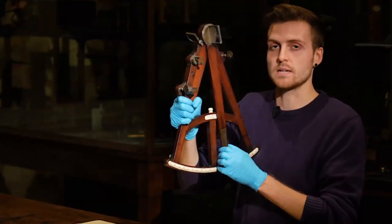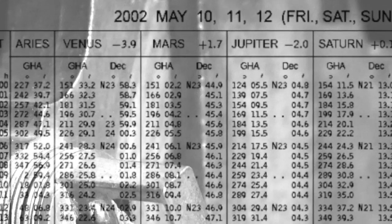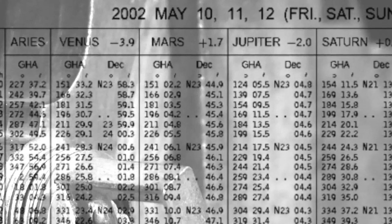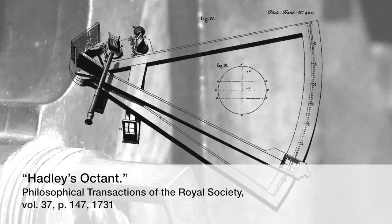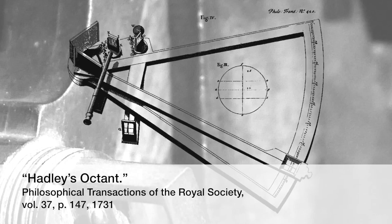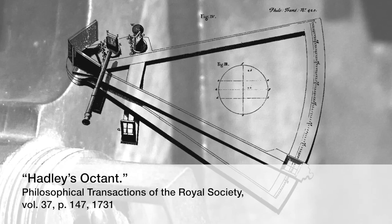The octant was developed simultaneously by two men around 1730: John Hadley in England and Thomas Godfrey in America. Although in 1699, Sir Isaac Newton had developed a very similar instrument based on the same principle, known as a reflecting quadrant.